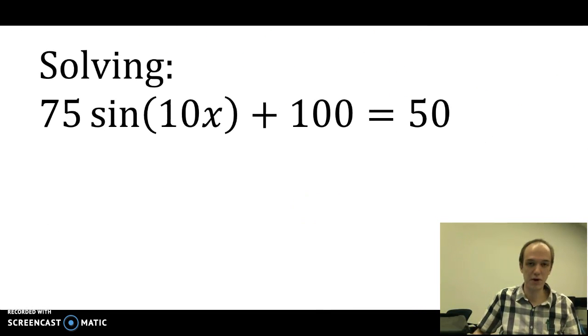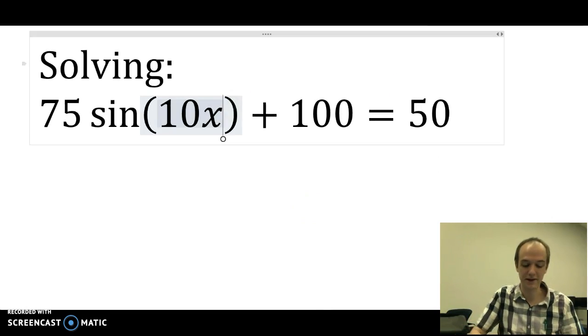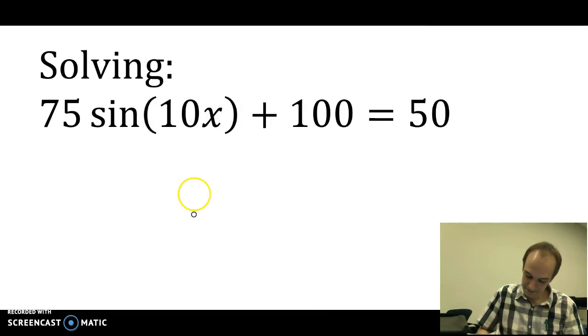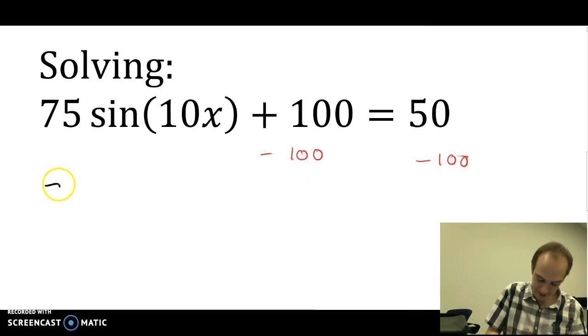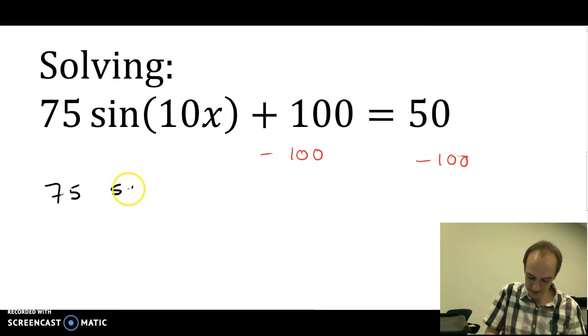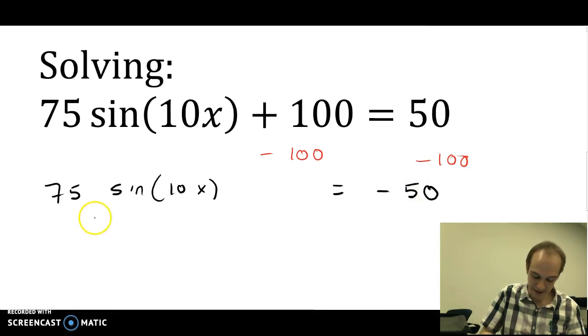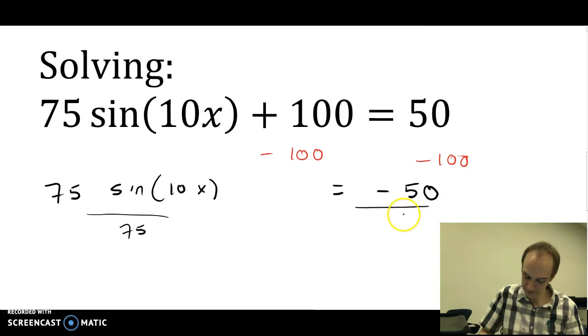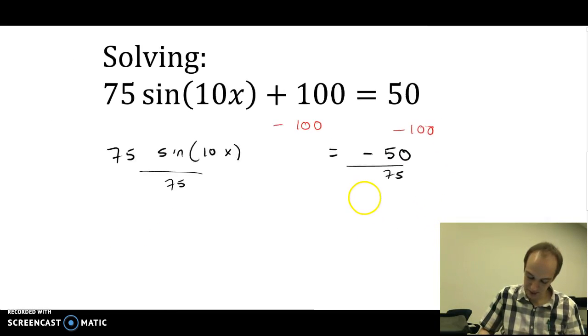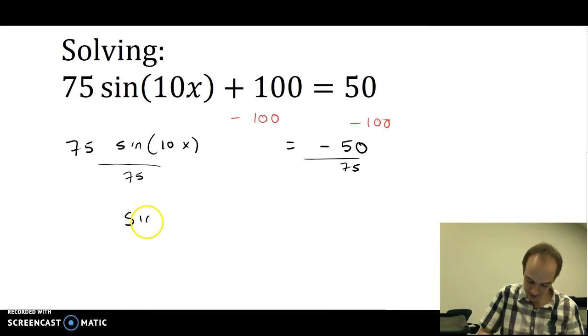So here's how you solve an equation that looks like this. First, we're going to subtract 100 from both sides. You're left with 75 sine of 10x equals negative 50. Then you divide by 75.